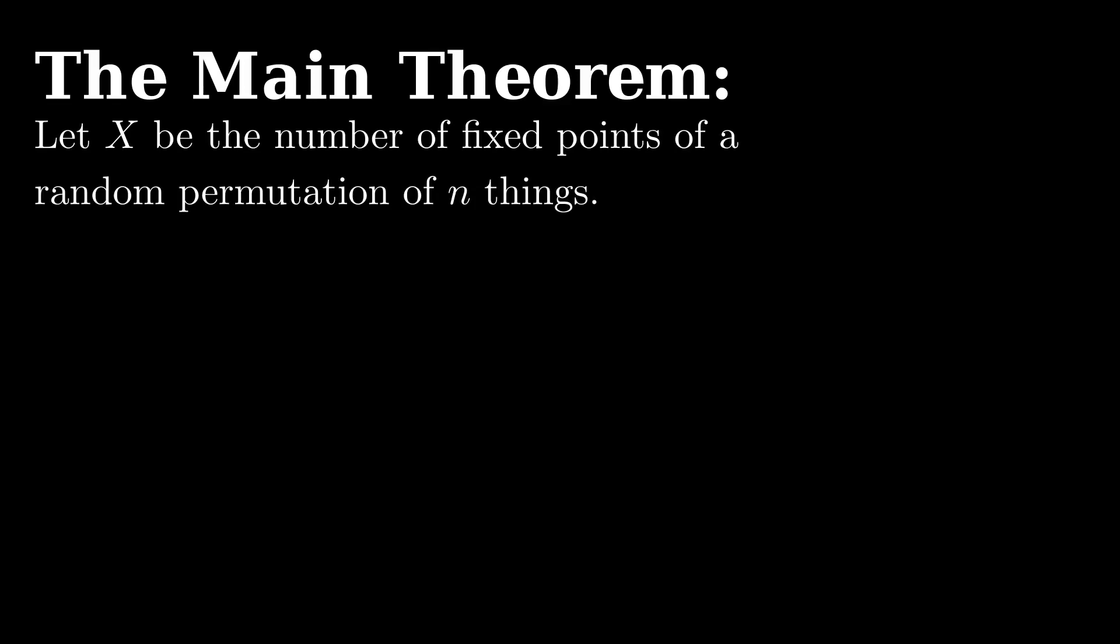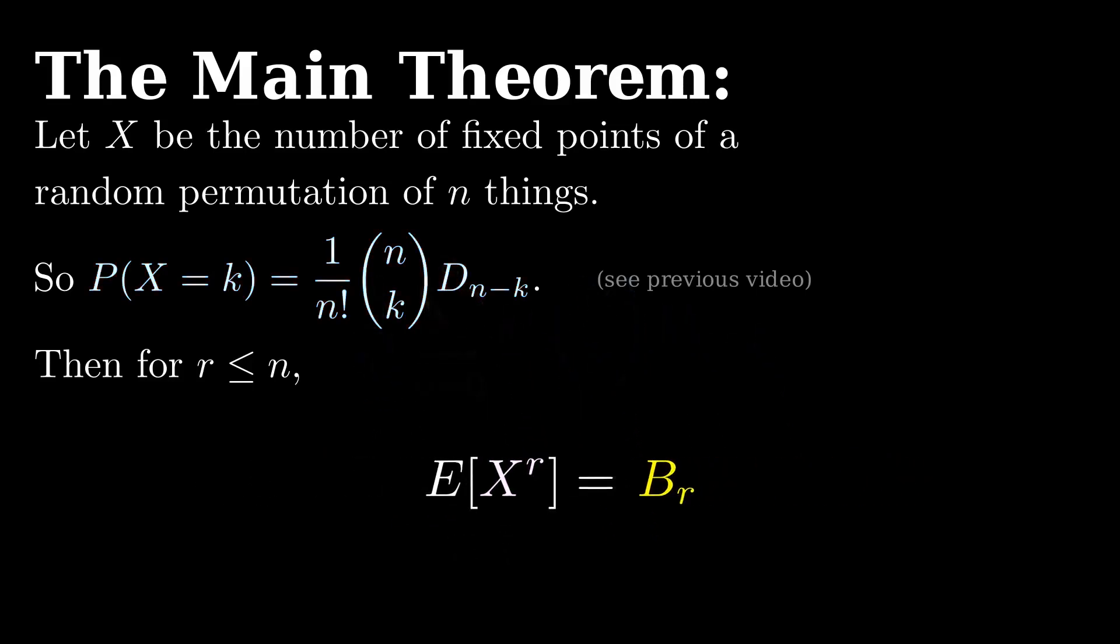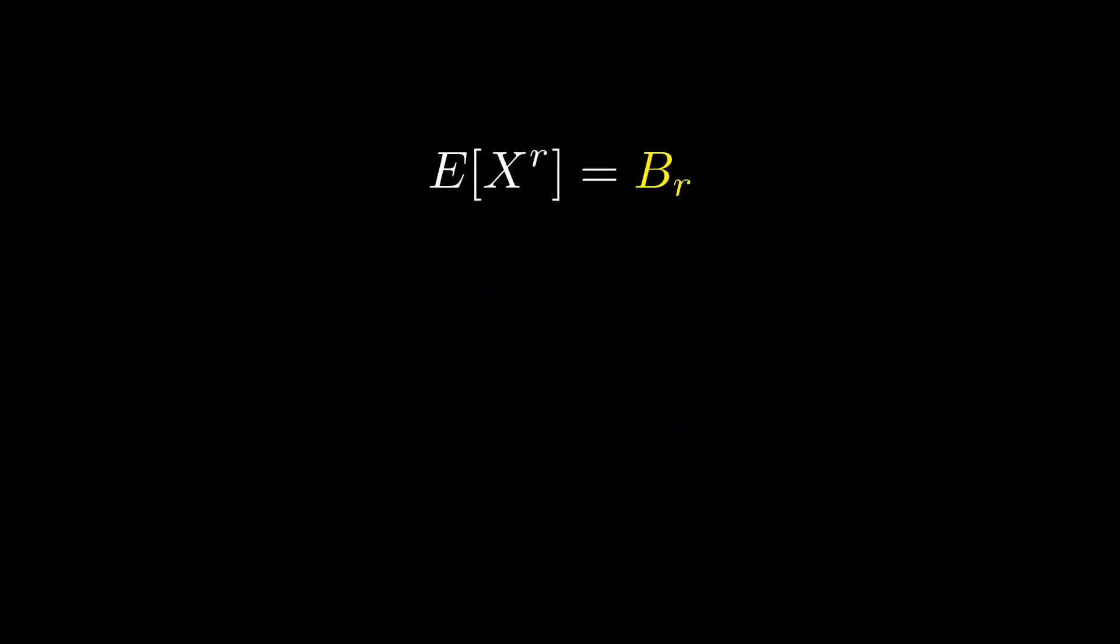The main theorem of this video shows us how to calculate the raw moments for the fixed point distribution. Ready? Recall that the probability that exactly k points are fixed is given by p of x equals k is 1 over n factorial times n choose k times d sub n minus k. That d sub n minus k is the number of derangements on n minus k things, like we saw in the last video. When r is at most n, the rth raw moment, which is given by the sum of k to the r times the probability that x equals k, given by this expression, e of x to the r is the sum of n choose k times k to the r times d sub n minus k all over n factorial equals b sub r. It's equal to the rth bell number! So all of the moments of order less than or equal to n are independent of n. We saw that last time for the expected value, but now we'll know it's true for all of them.